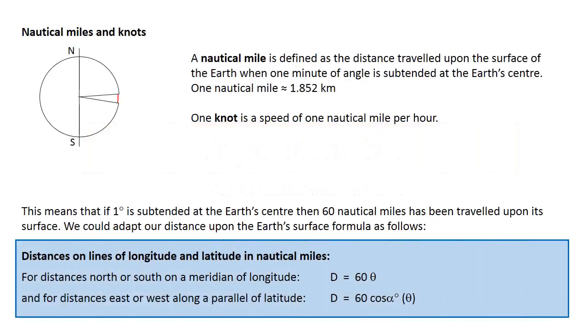This video covers nautical miles and knots. A nautical mile is defined as the distance travelled on the surface of the Earth when one minute of angle is subtended at the Earth's centre.